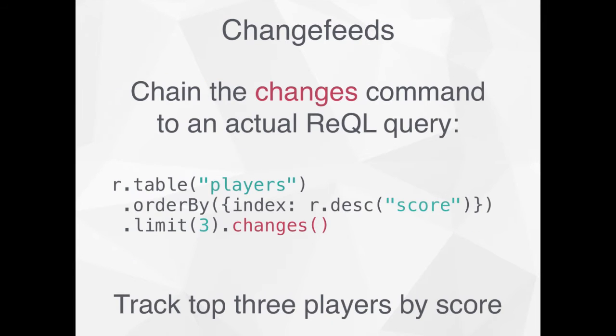Change feeds also don't just apply to the entire table — you can use them on your whole expanded query. So here we're getting a list of players in descending order by their score, and we're getting just the top three. We don't care about the rest of them; we just want the top three. And if those top three change, we want to know about it, so we do a dot changes on that. Now we can keep our scoreboard up to date, up to the moment.